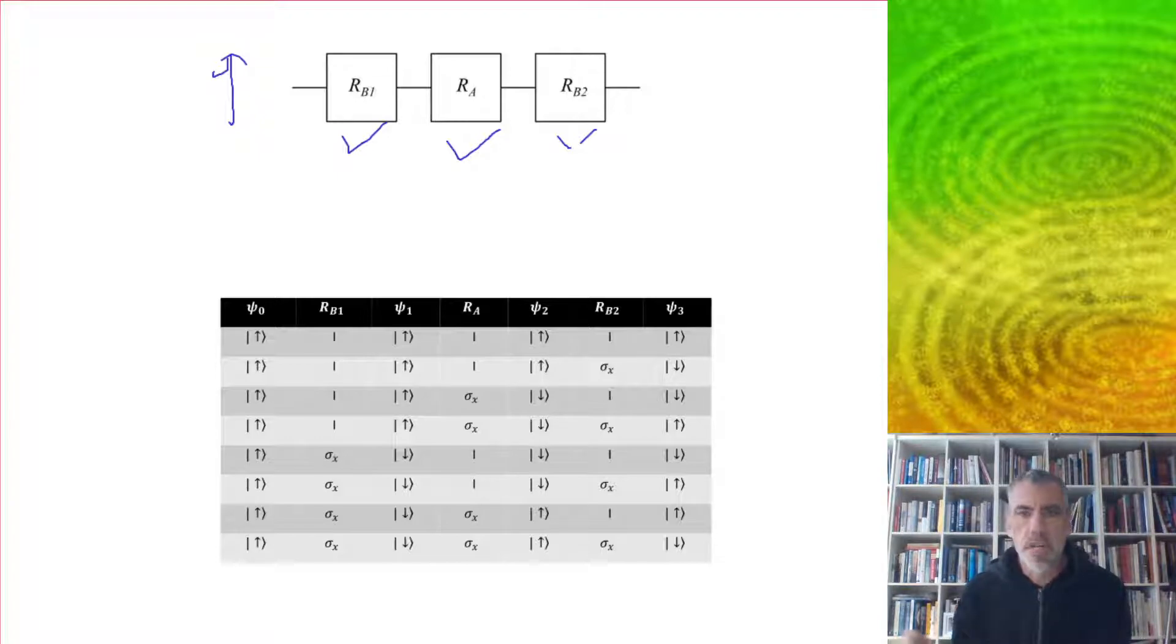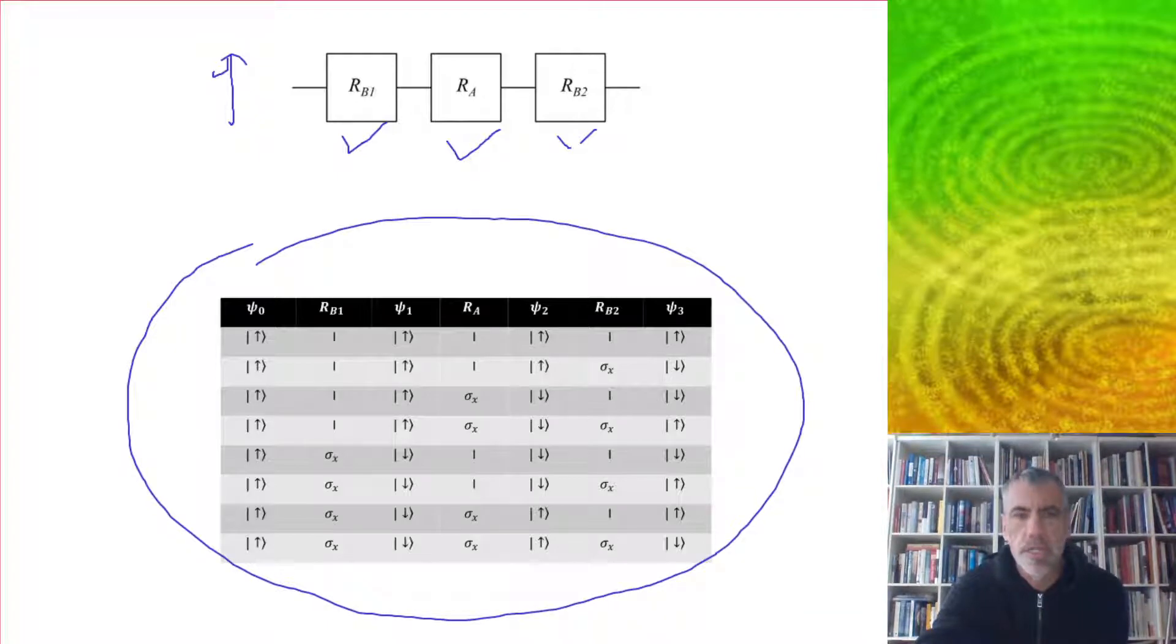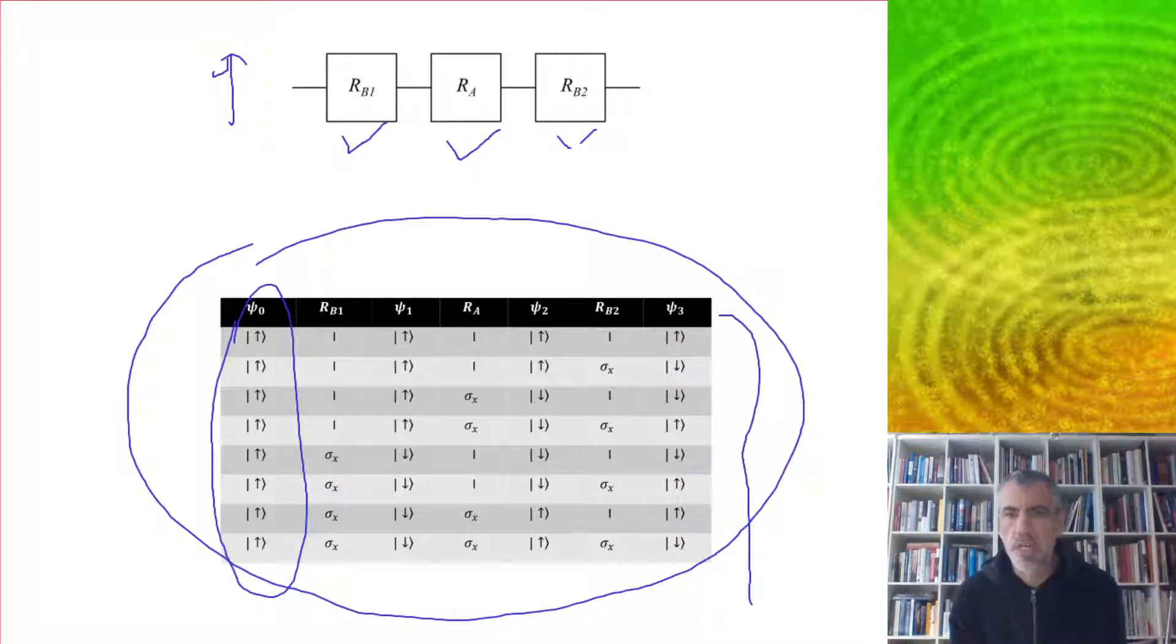For the different outcomes, we can just do a table for all the different possibilities. We always start in the up position, and then the different moves can be - if player B does the identity or if they flip, and so on. What you find is that half the time it's going to be up, and half the time it's going to be down, so each player should win 50% of the time.